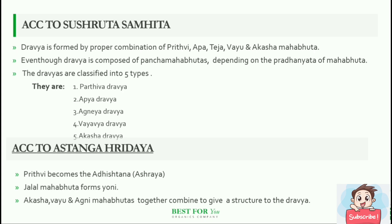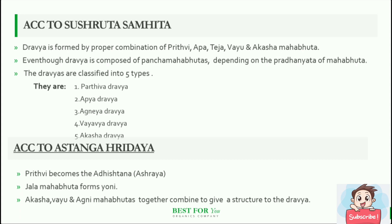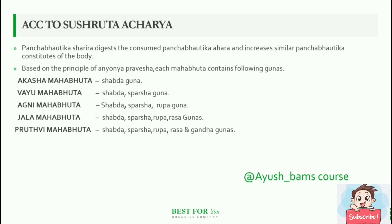The five types are: Parthiva Dravya, Apya Dravya, Agnaya Dravya, Vayavya Dravya, and Akasha Dravya. According to Astanga Hridaya, Prithvi becomes the adhisthana — which means ashraya. Pral Mahabhuta forms yoni. Akasha, Vayu and Agni Mahabhutas together combine to give structure to the Dravya. According to Shushruta Acharya, Panchabhautika sharira digests the consumed Panchabhautika ahara and increases similar Panchabhautika constituents of the body.